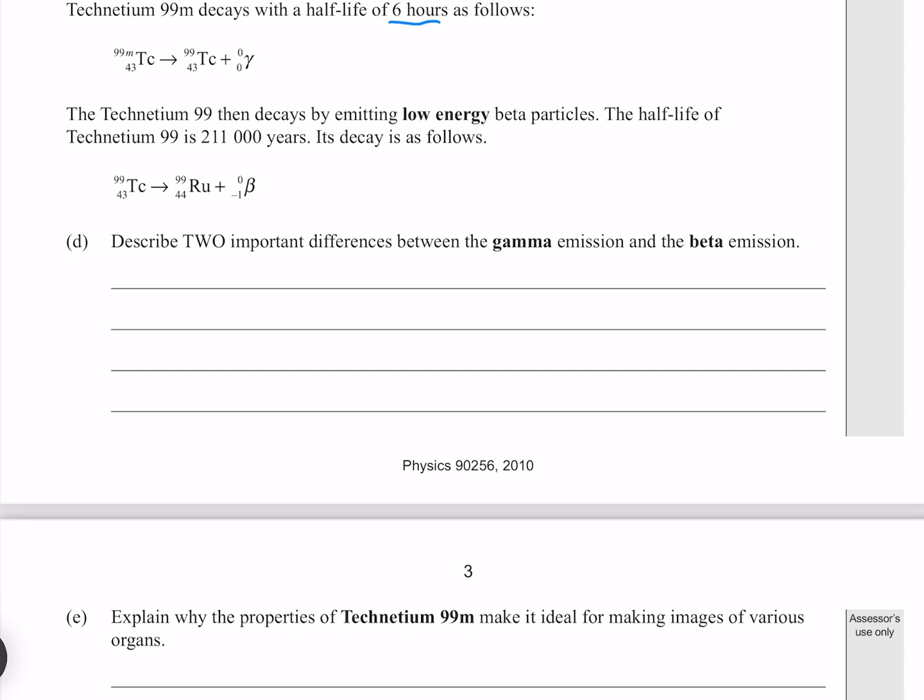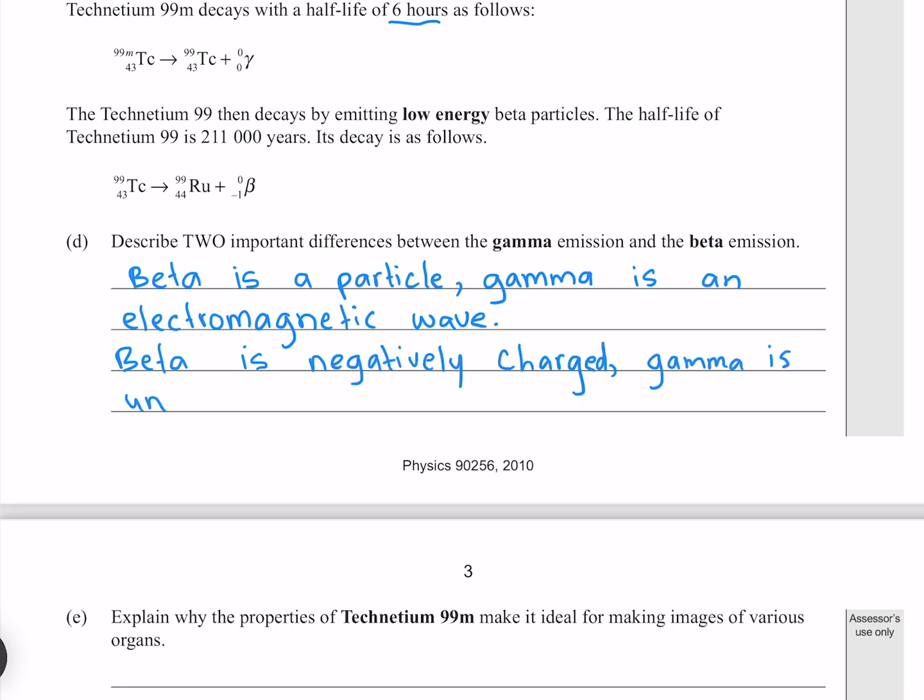Describe two important differences between the gamma emission and the beta emission. There are many different comparisons we could make. The ones I'll choose is that beta is a particle, gamma is an electromagnetic wave, and that beta is negatively charged, whereas gamma is uncharged.